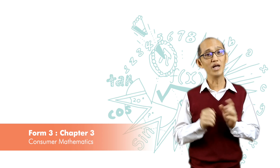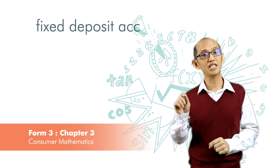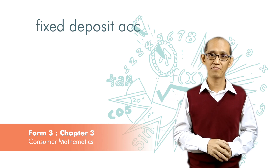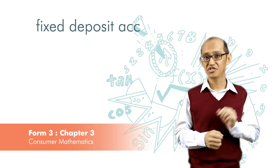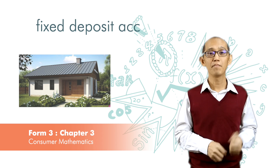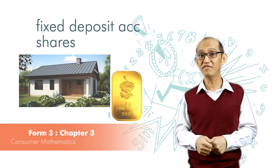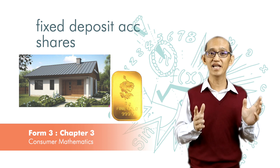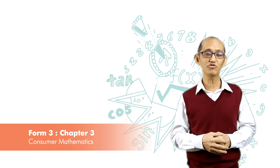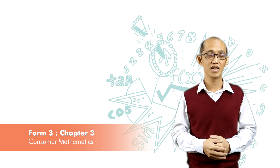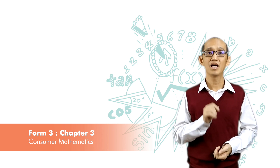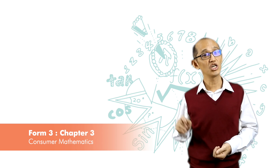First, you might want to put some money in a fixed deposit account to earn slightly higher interest. Or you might consider buying a house, buying some shares, or even gold as an investment. So at the end of the day, you may end up with only 10,000 ringgit in your savings account, and the rest in a fixed deposit account, a house, some shares, gold, diamond, and so on.